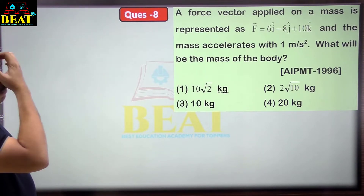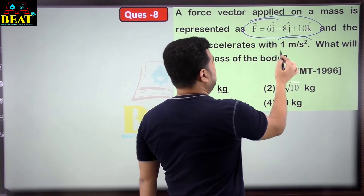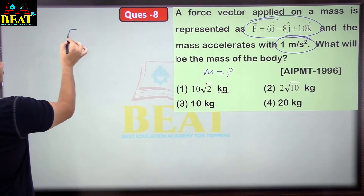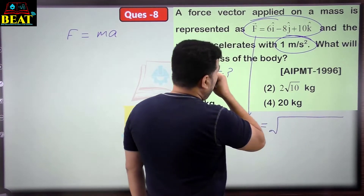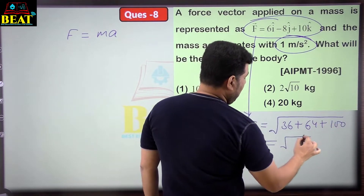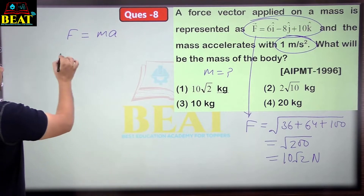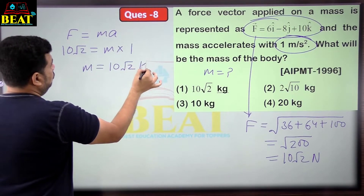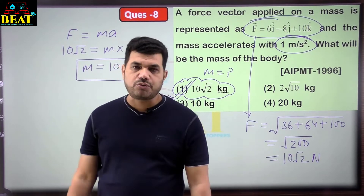Question 8 is a previous year question: a force vector applied on a mass accelerates it at 1 m/s². What is the mass? Using F = ma, we need the magnitude of force. Force components: 6, 8, 10. Magnitude = root(6² + 8² + 10²) = root(36 + 64 + 100) = root(200) = 10 root 2 Newton. With acceleration 1 m/s², mass = 10 root 2 kg.